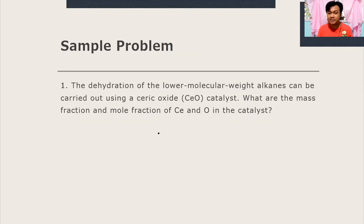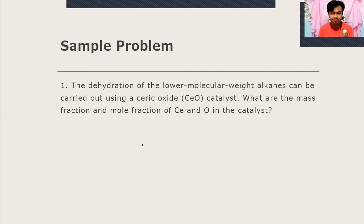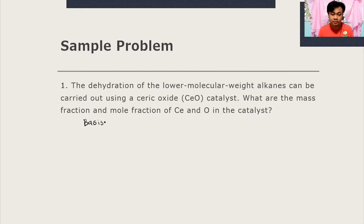We have a sample problem: the dehydration of lower molecular weight alkylenes can be carried out using ceric oxide (CeO) catalyst. What are the mass fraction and the mole fraction of Ce and O in the catalyst? To solve this, you first choose a good basis. Since we are given elements, a good basis would be one kilogram mole — or one mole — of CeO.